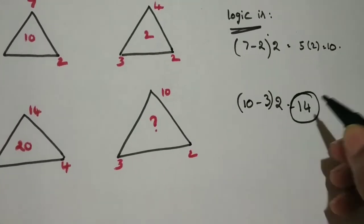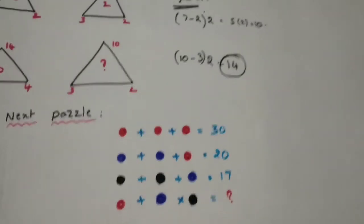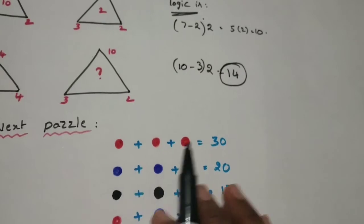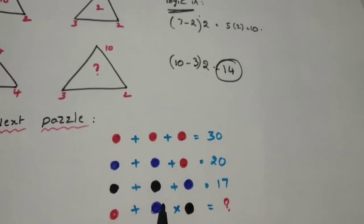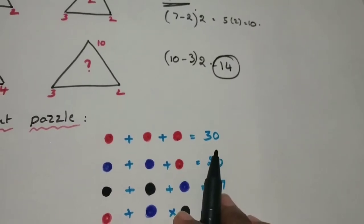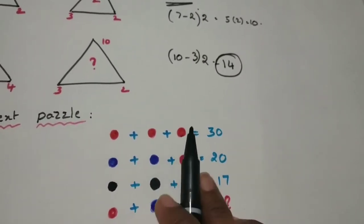Next puzzle is like this - the symbols they will give: red colored dots, blue colored dots, and black colored dots. Then red dot values, if you are adding that, you are going to get how much is the red dot. That means all are same numbers in the same colored dots.